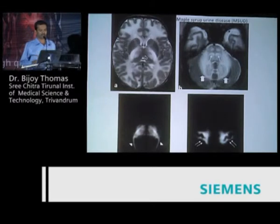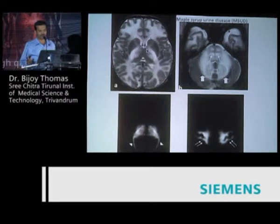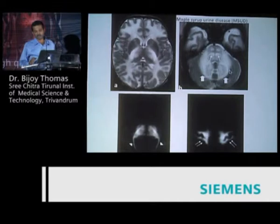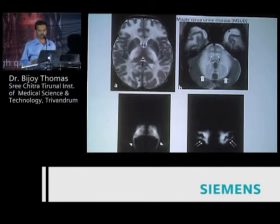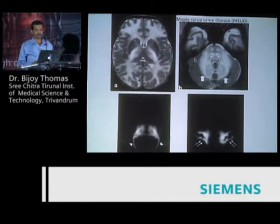It is very important to diagnose maple syrup urine disease in an acute setting, because if you miss the diagnosis, the chance of dialyzing this patient and preventing further damage is lost, and it could very well be a medico-legal case in Canada. Maple syrup urine disease is a myelin-splitting disease—it affects areas where myelination has already occurred. In a neonate, the posterior fossa myelinates first, along with the posterior dorsal tracts and the corticospinal tract, and myelin edema occurs in these cases.